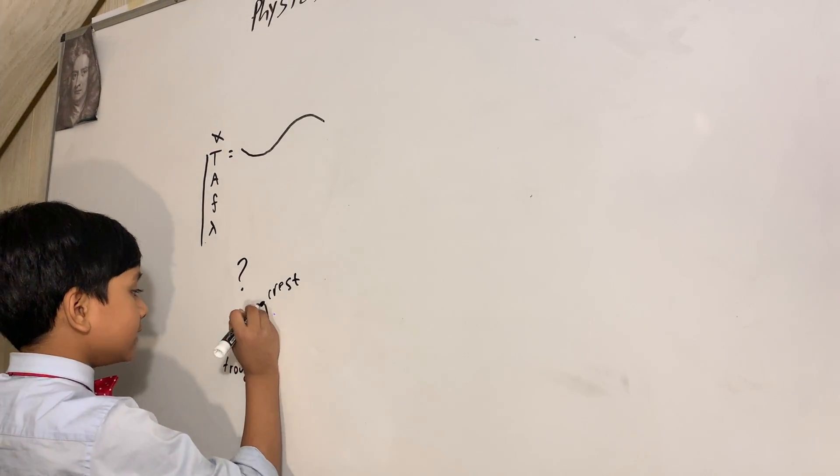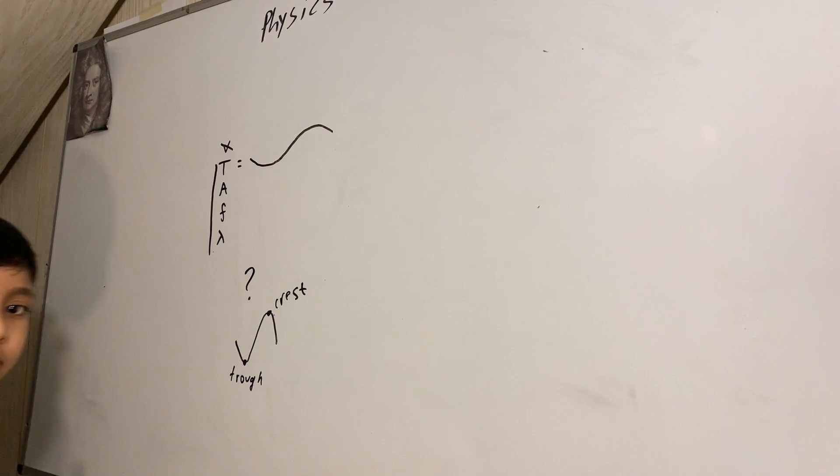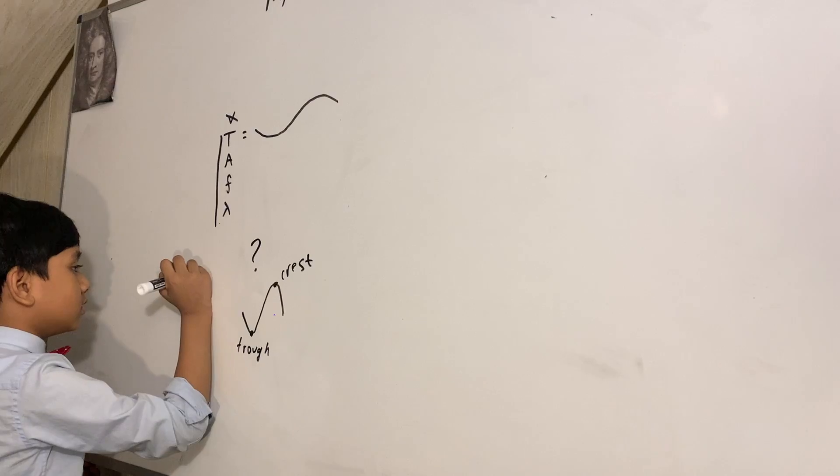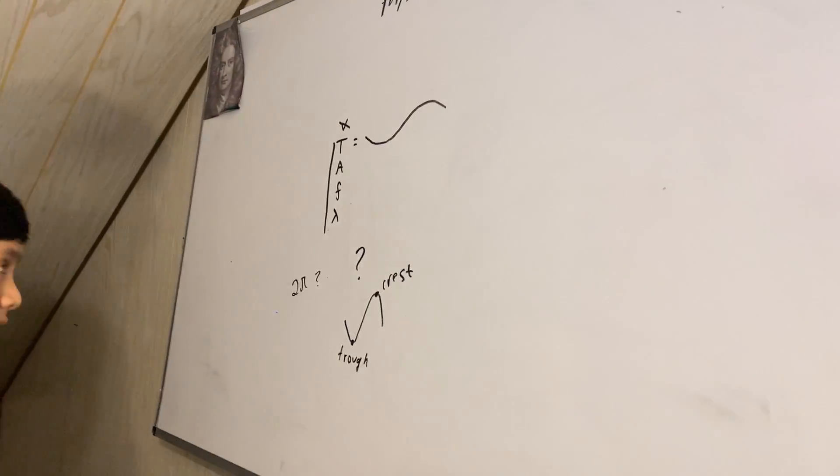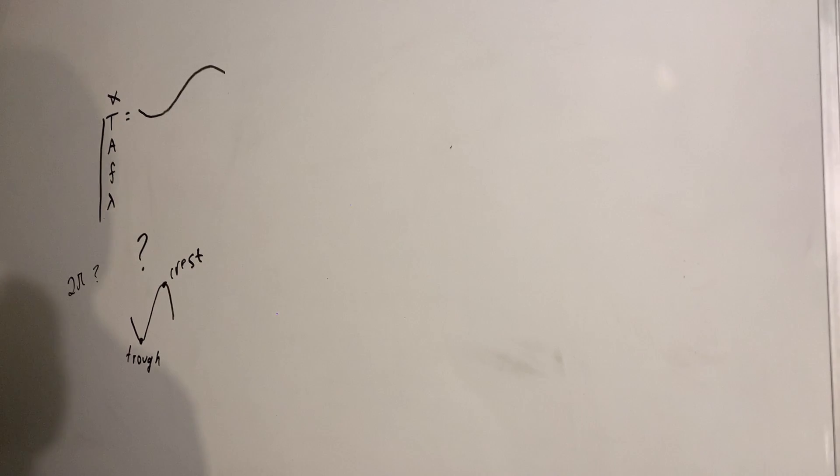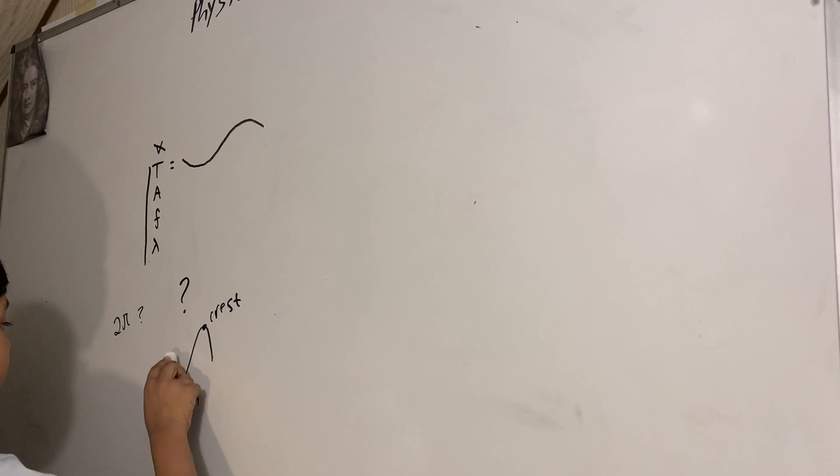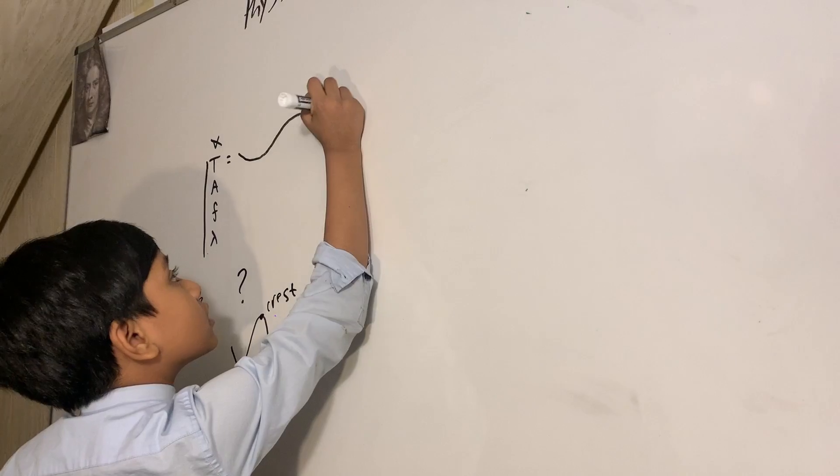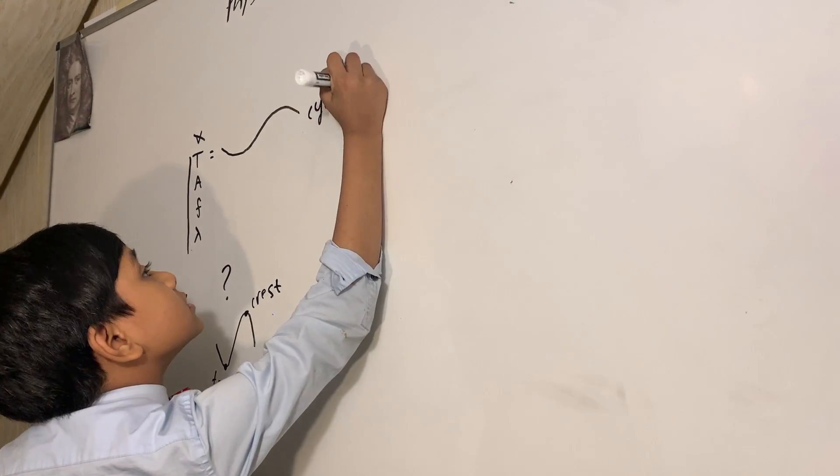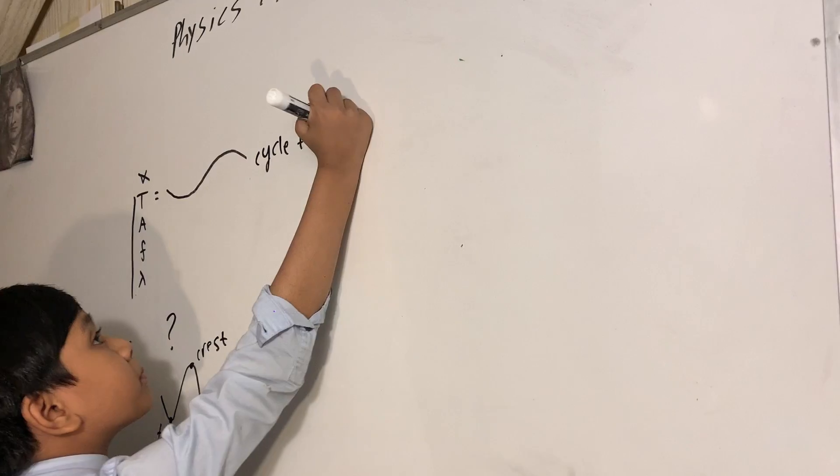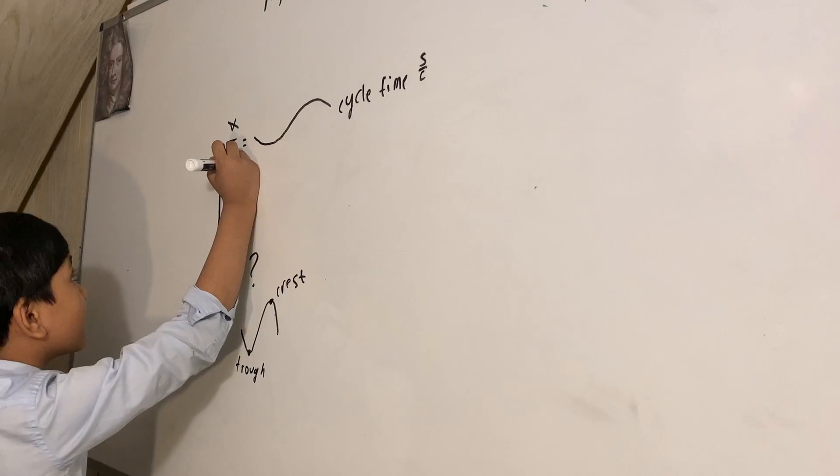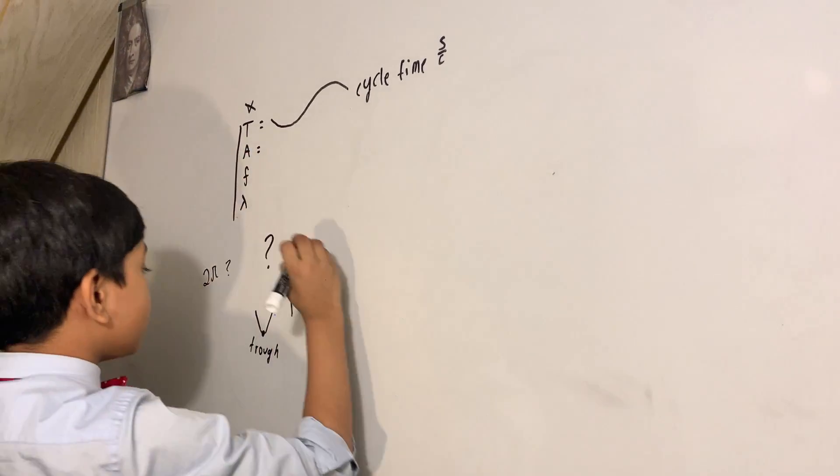A cycle is when you've already performed one trough and one crest. By the way, a cycle in radians is 2 pi, sometimes important. That means that T is the period in which it takes a cycle to be performed. It's measured in seconds, basically seconds per every cycle or one over Hertz.